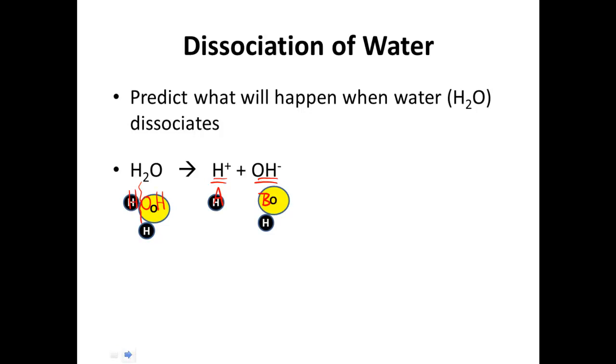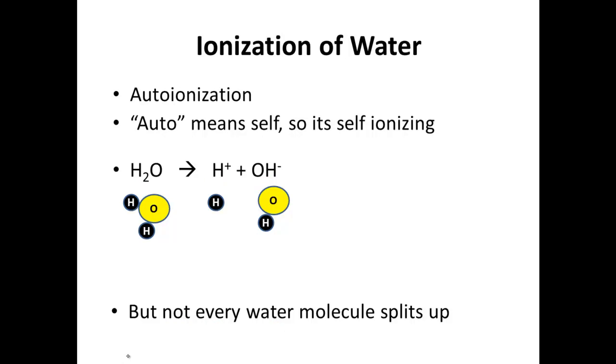And now my pictures are just painting pictures for those of you who need pictures. But I do want you to know that not every single water molecule does this. Some of them do it, but not all of them. It does not happen frequently, which is why it's considered a weak acid or a weak base. Now we also use this term autoionization. Auto means self, so it's self ionizing, meaning water just does this. Nothing causes it to happen. It autoionizes. It breaks apart and ionizes into H+ and OH-. But I do want to remind you, not every water molecule does this. It does it by itself, though.